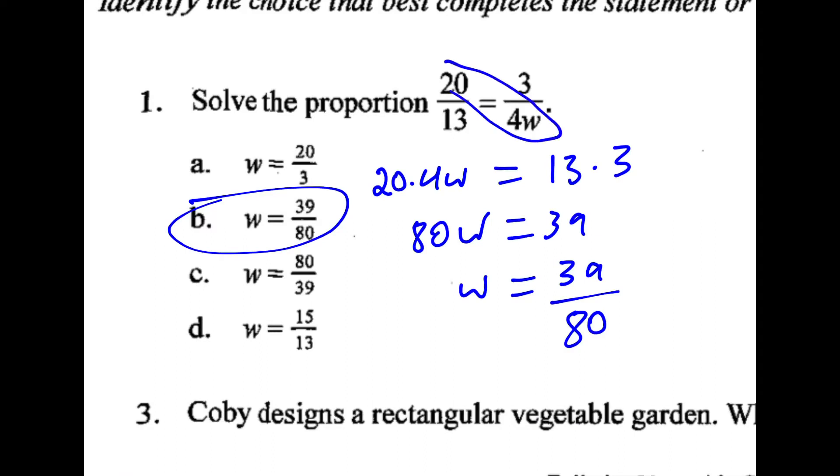Number 1, to solve this proportion we can cross multiply. On the left we have 20 times 4w, or 80w. On the right we have 13 times 3, which is 39. We divide both sides by 80, and our answer is b.